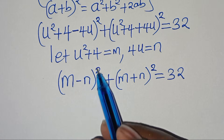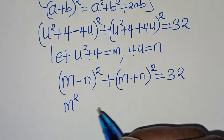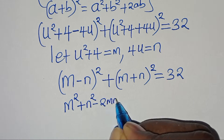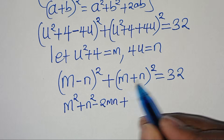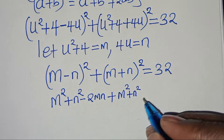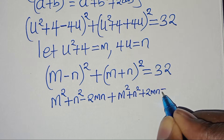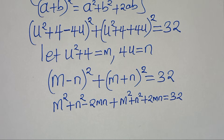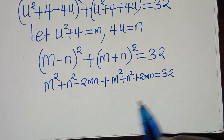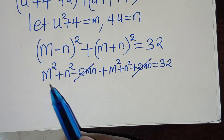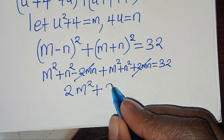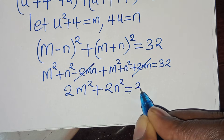The next step: let's expand this equation. We get m² + n² minus 2mn, then plus m² + n² plus 2mn, equals 32. The minus 2mn and plus 2mn cancel, so simplifying we get m² + m² which is 2m², plus n² + n² which is 2n², equals 32. Factoring out 2 gives m² + n² equals 32.